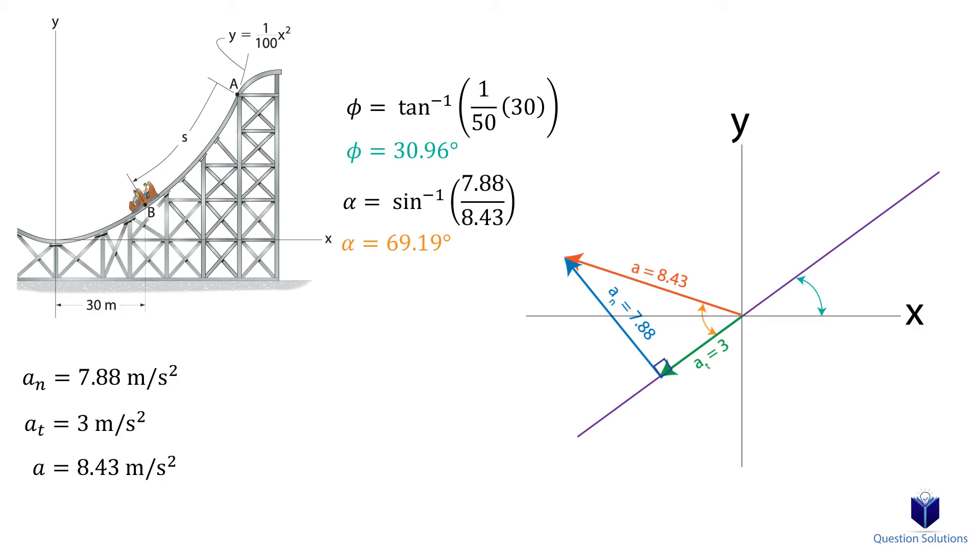The last step is to figure out the angle the magnitude of acceleration makes with the x-axis, which is the angle the tangential acceleration makes with the x-axis subtracted from the angle between the magnitude acceleration and tangential acceleration. So our answer is 38.23 degrees. Thanks for watching.